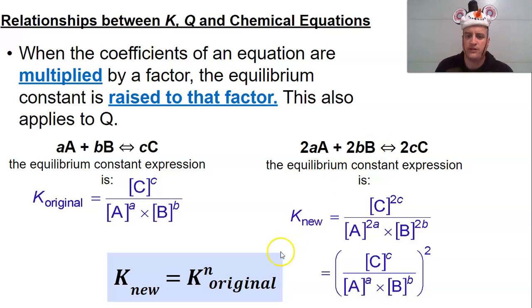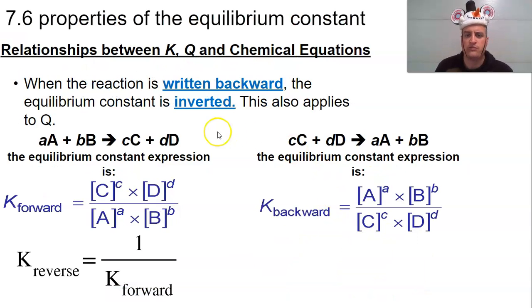Multiplying the amounts to square it or cube it, whenever the case may be, or reversing the reactions. All of those are going to play a role at producing a new K value.